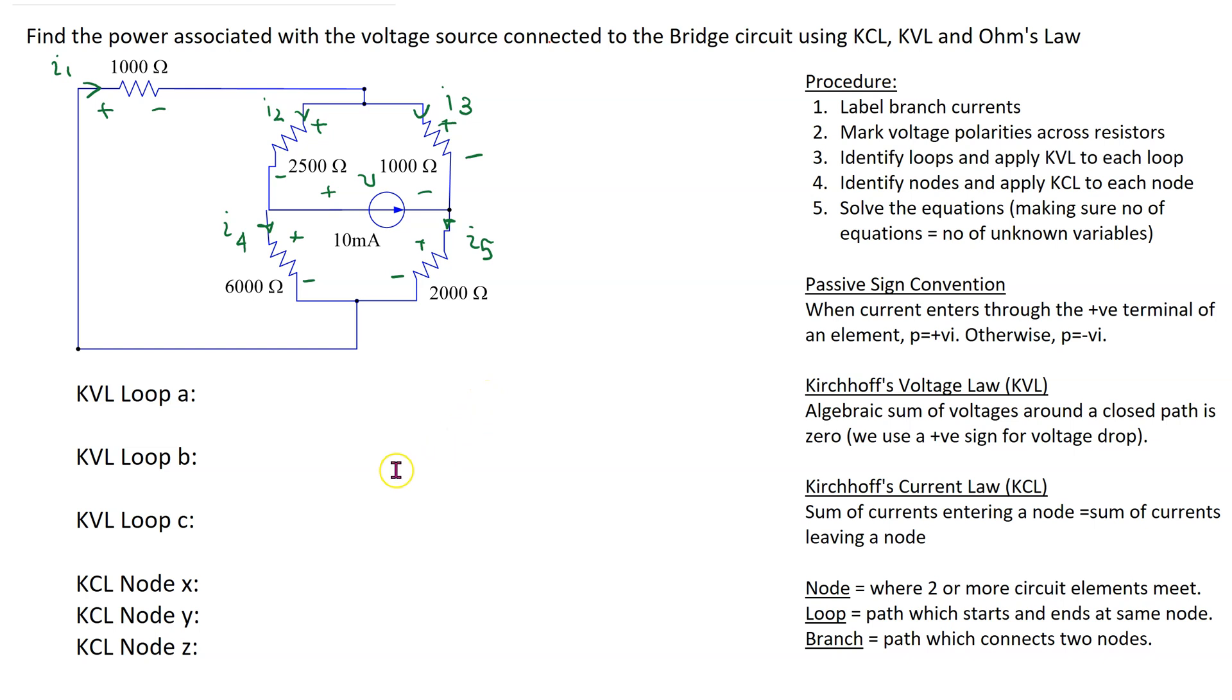Thus in this problem we have six unknown variables and these are V, I1, I2, I3, I4 and I5. We therefore need six linear equations to be able to solve this circuit. In order to do that we apply Kirchhoff voltage law to identified loops and Kirchhoff current law to identified nodes.